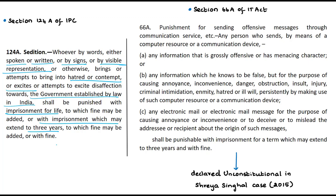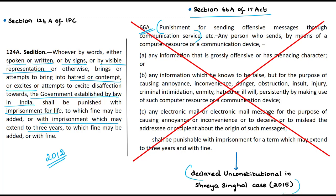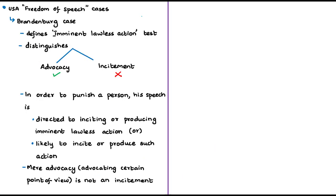Another example: in 2012 two girls in Mumbai were arrested under Section 66A of the IT Act of 2000 for criticizing the shutdown of Mumbai after the death of a Shiv Sena leader on Facebook. Section 66A dealt with punishment for sending offensive messages through communication service. However, in 2015 this section was declared unconstitutional by the Supreme Court in the case known as Shreya Singhal versus Union of India. In this Shreya Singhal judgment, Justice Nariman said we should adopt the test used by the US Supreme Court in the Brandenburg case of 1969, where the distinction between advocacy and incitement was highlighted.